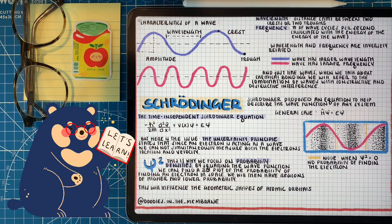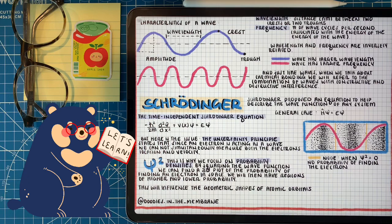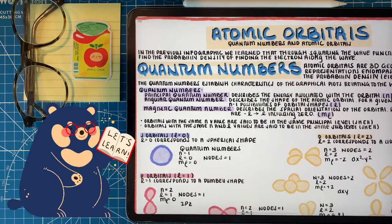By squaring the wave function — this value will always be positive — we create a 3D plot of the probability of finding the electron in space. This probability density is what leads to us forming atomic orbitals. There's also a thing called a node: a node is when the probability density equals zero. You can see the nodes on the diagram, labeled in yellow. An atomic orbital is a 3D geometric shape representing 90% of the probability density at that energy level, which is why different orbitals have different shapes and sizes.